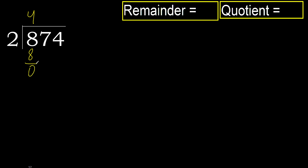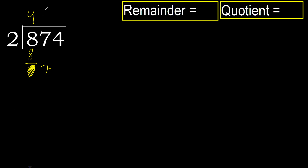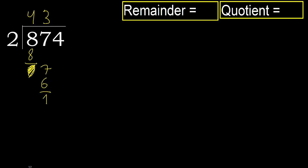Subtract. Next, bring down 7. 2 multiplied by 4 is 8 — it's greater. Multiply by 3: 6 — it's not greater. Subtract: 7 minus 6 is 1.